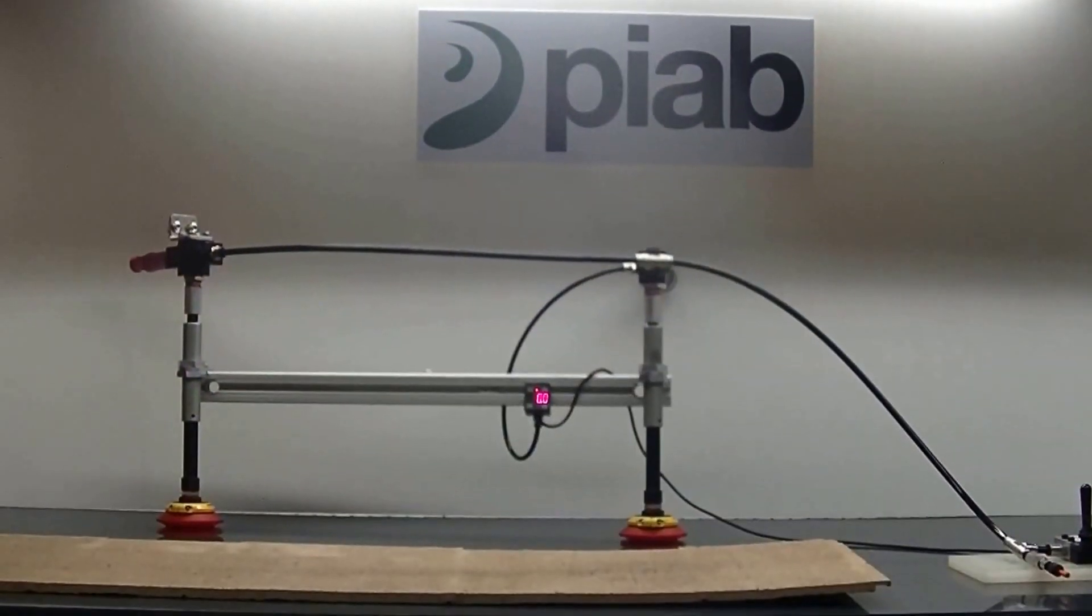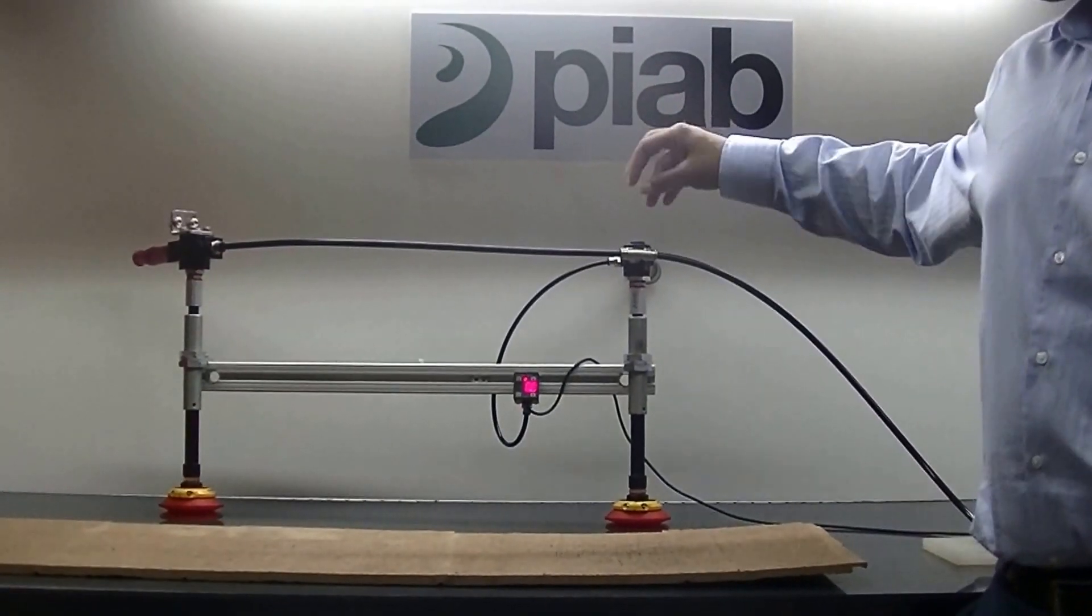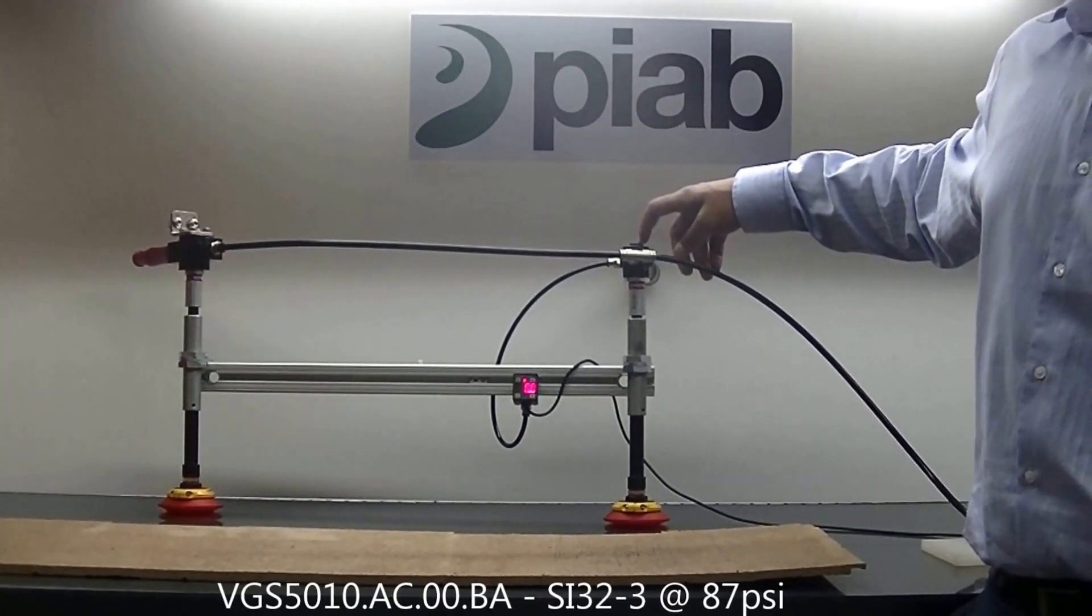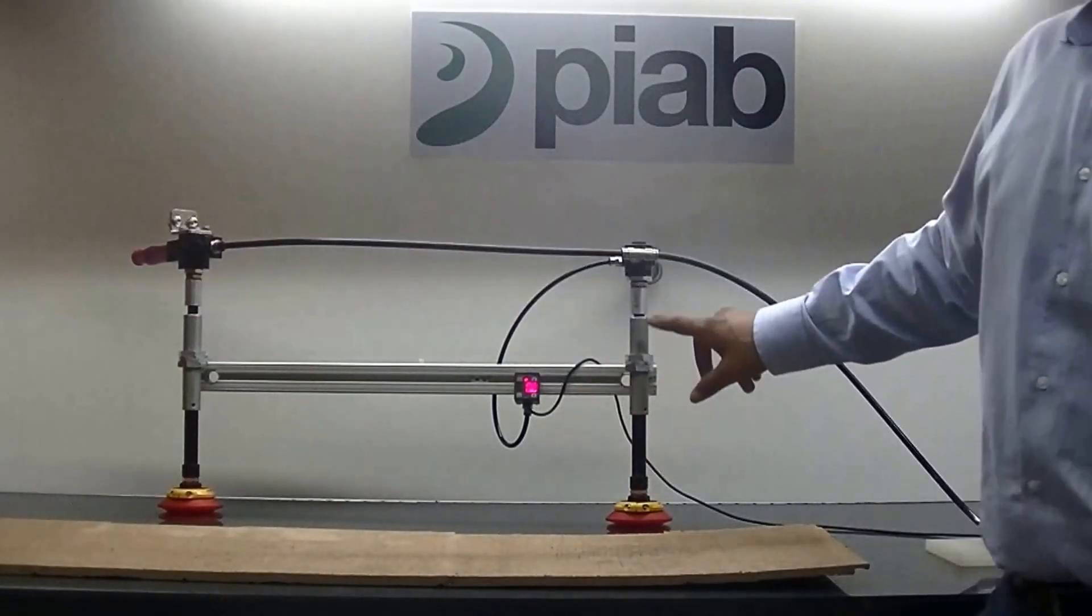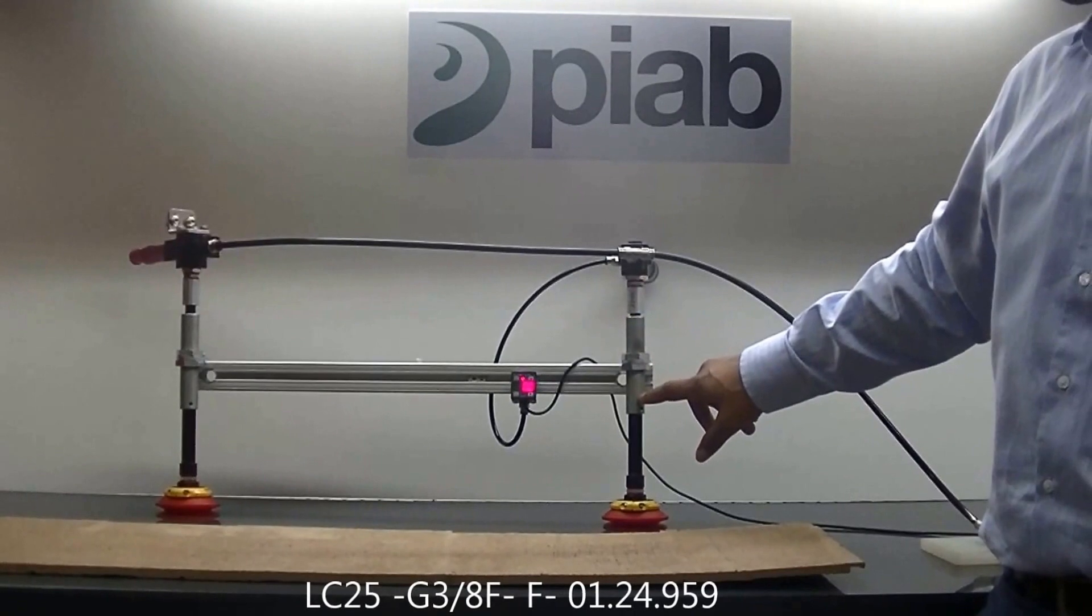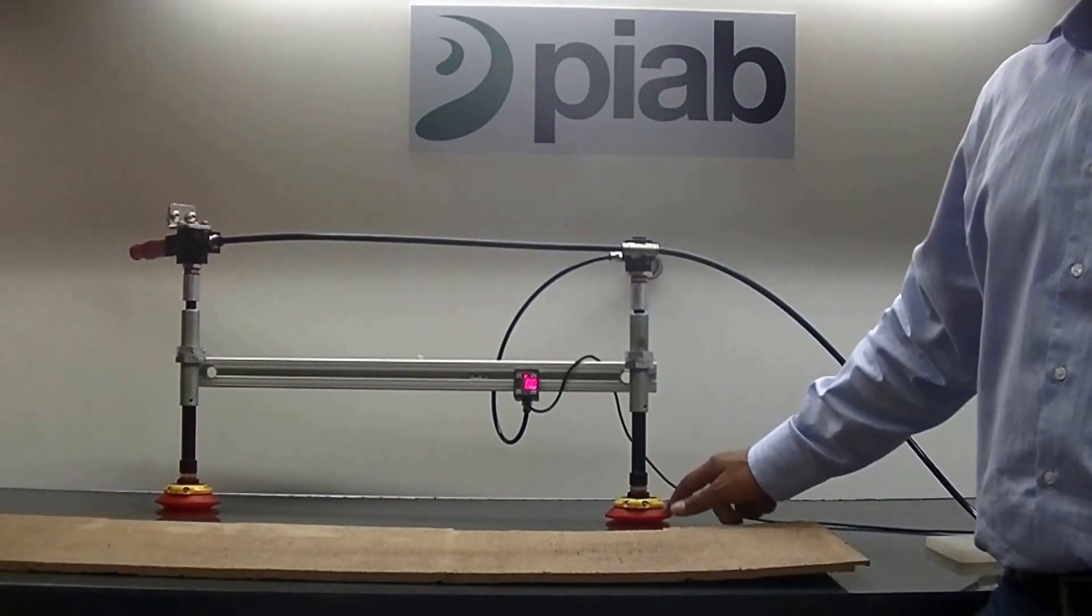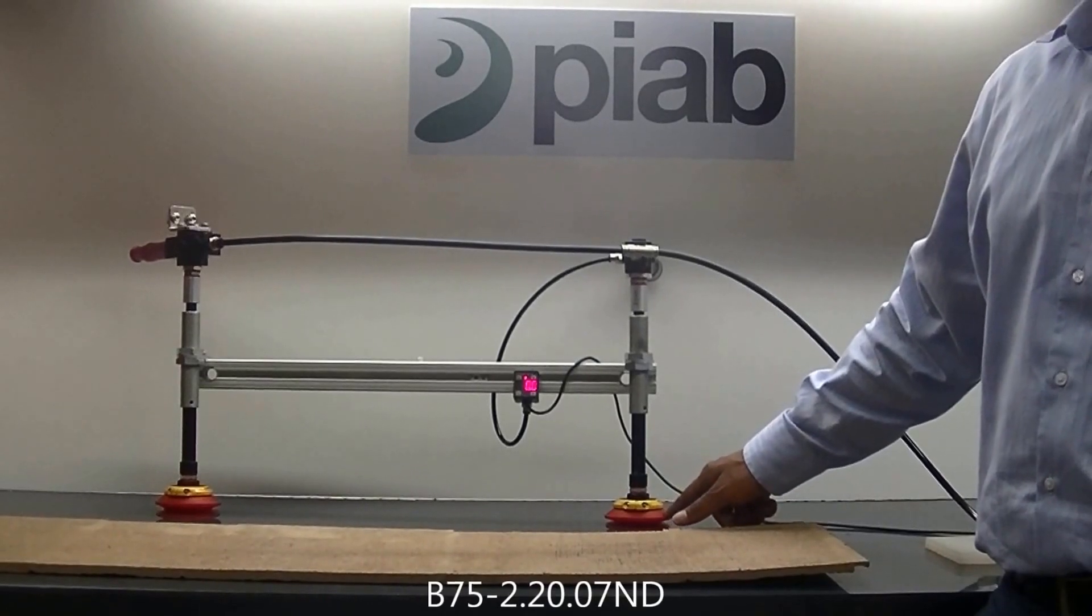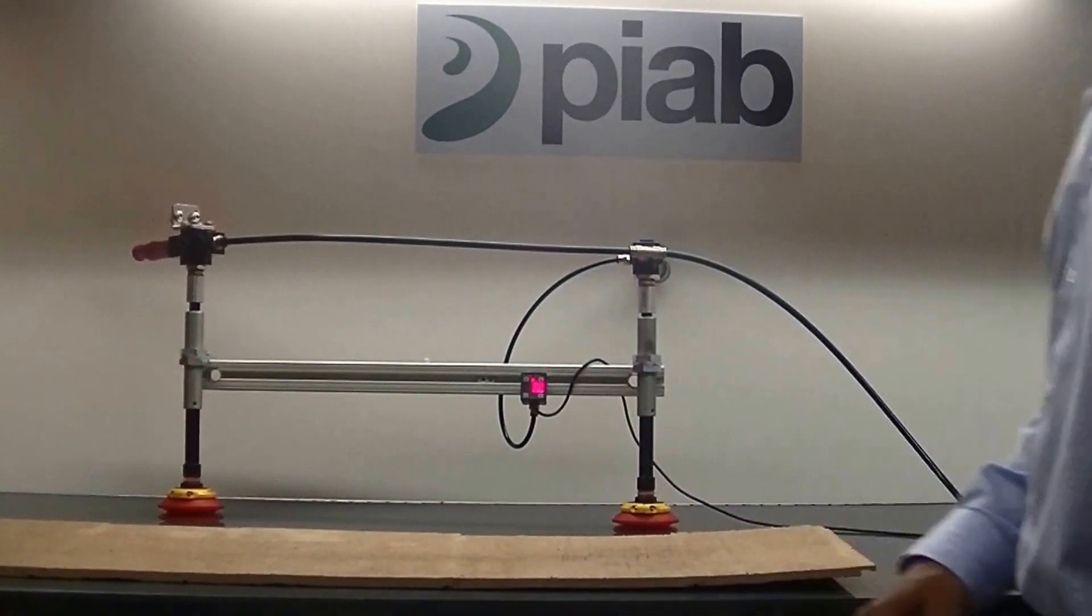In this test, what we're using is two VGS 5010 generators, one here and one here. We have the level compensator right in line with the mounting bracket so we can mount it to our extrusion. And then we have a standard 75 millimeter silicone suction cup.